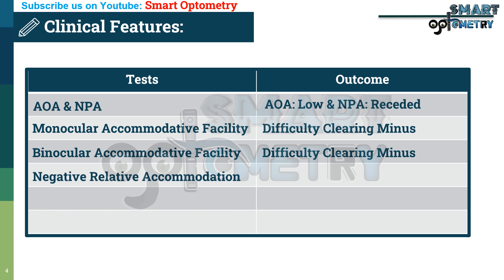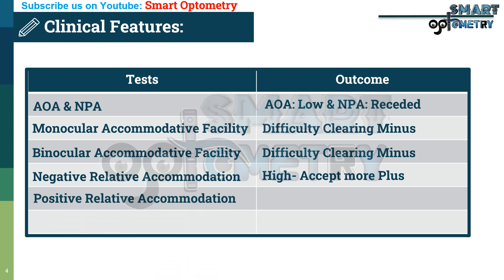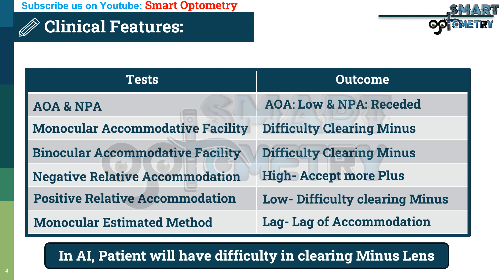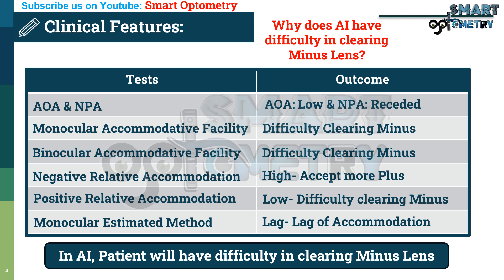Fourth, in negative relative accommodation (NRA), the patient will accept high plus, so NRA will be high. Fifth, in positive relative accommodation (PRA), the patient will have difficulty clearing the minus lens, so PRA will be low. Sixth, in the monocular estimate method (MEM), there will be a lag of accommodation, generally more than 0.75 diopters. Remember, in accommodation insufficiency the patient has difficulty clearing the minus lens.